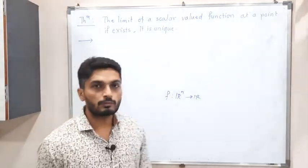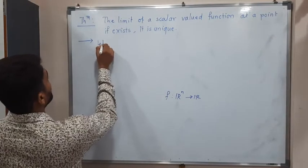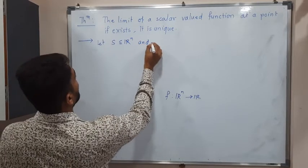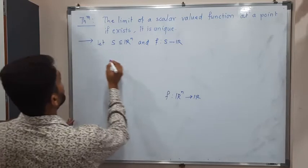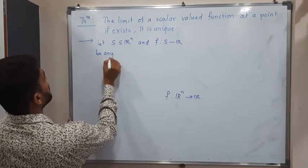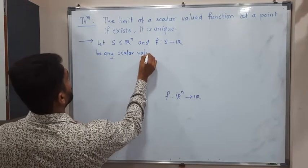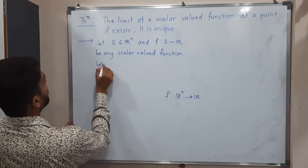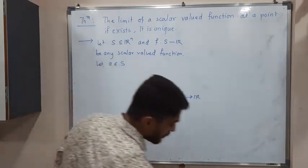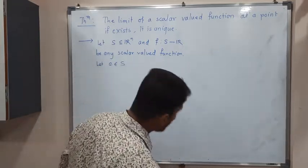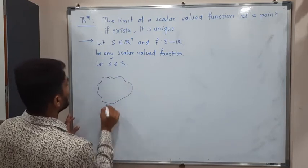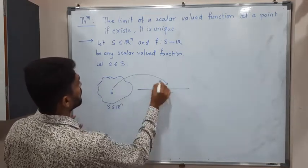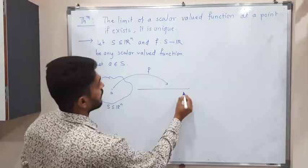We will start with the basic setup. Let S be a subset of ℝⁿ, and let f be a function from S to ℝ — a scalar-valued function. I am taking one point: let a belong to S. In the form of a diagram, this is some subset S of ℝⁿ, we have a point a, and f is a function from S to ℝ.